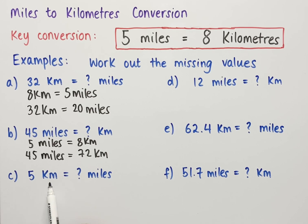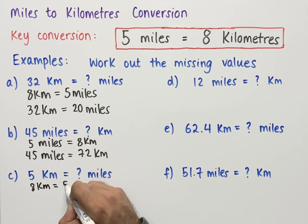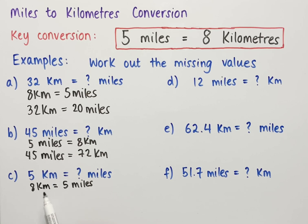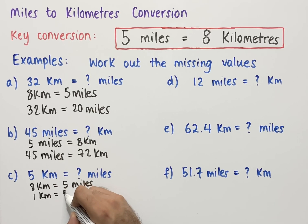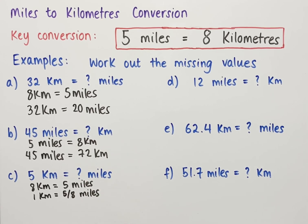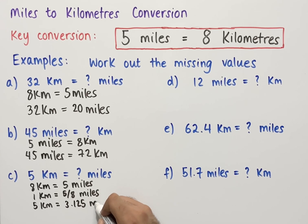Example C is working out 5 kilometers in miles. Starting with the conversion — 8 kilometers equals 5 miles — since 5 kilometers is not a multiple of 8, we use the unitary method. We divide both sides by 8 to find that 1 kilometer equals 5/8 miles. Then we multiply both sides by 5 to get 5 kilometers equals 5 times 5/8, which on a calculator gives us 3.125 miles.